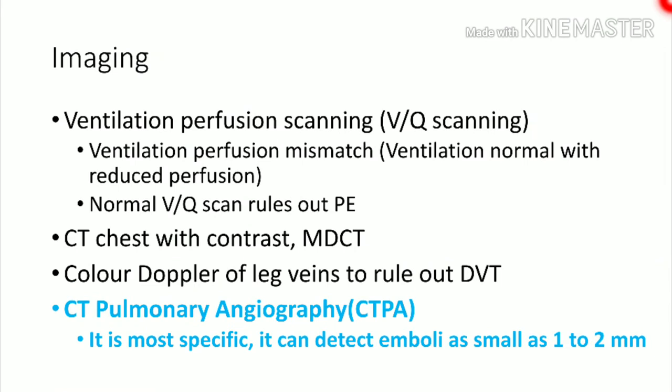Ventilation-perfusion (VQ) scanning is a commonly used investigation for pulmonary embolism. In PE, ventilation is normal but perfusion is reduced — this VQ mismatch is a key finding. MDCT chest may show some findings, but the gold standard investigation for pulmonary embolism is CT pulmonary angiography, which can detect emboli as small as 1 to 2 millimeters and should be done in all suspected cases.